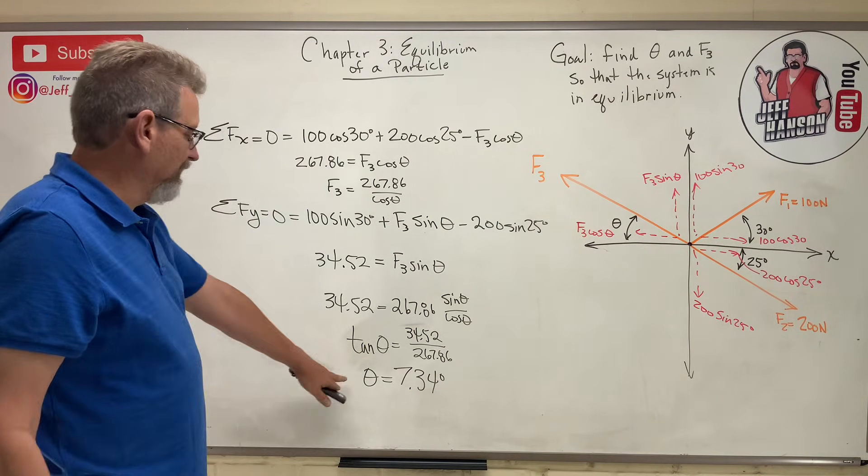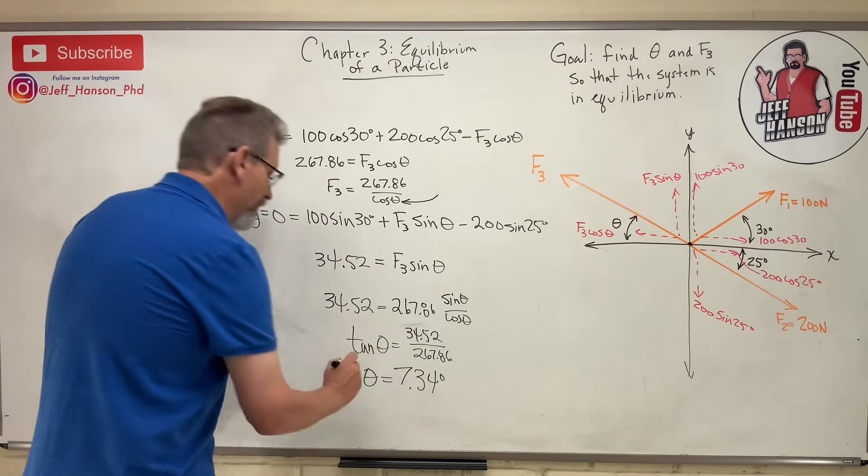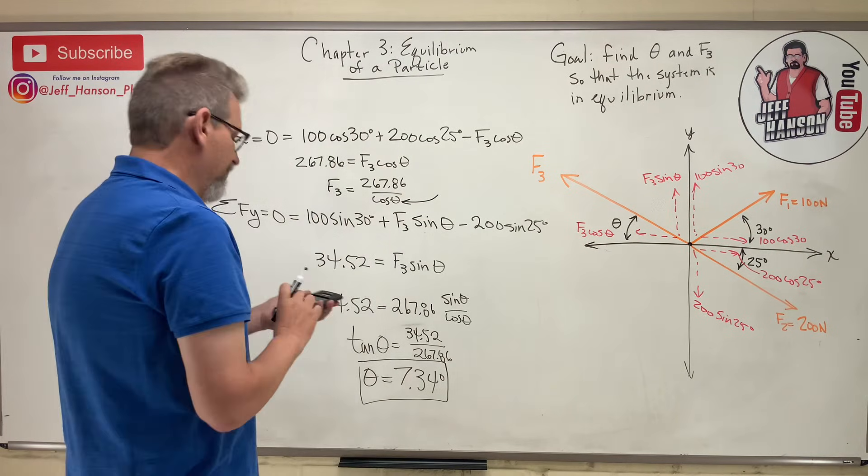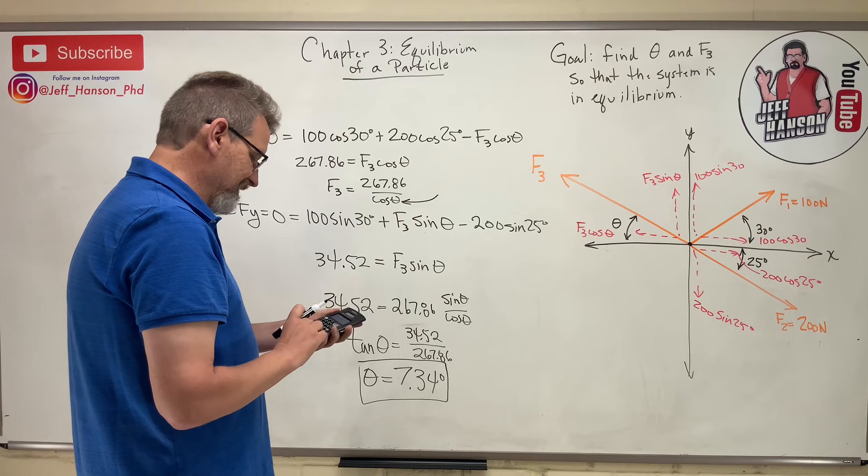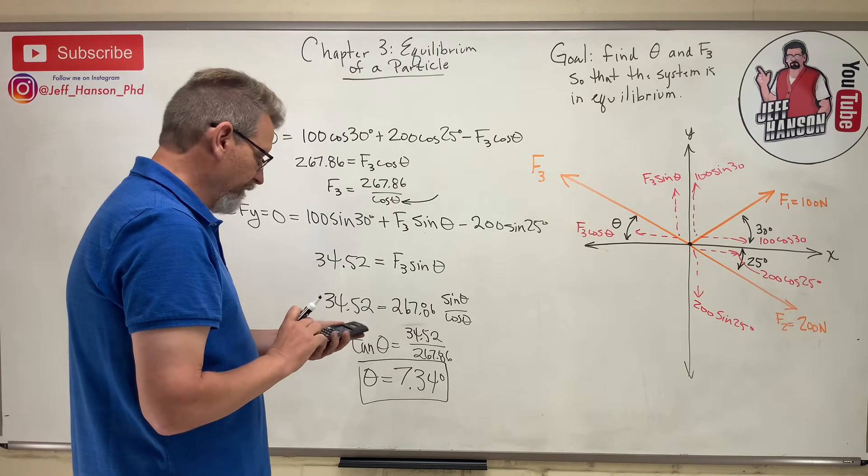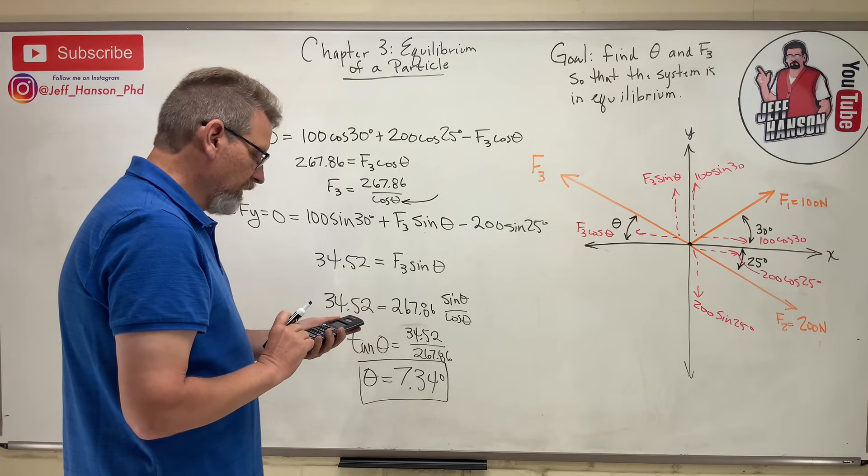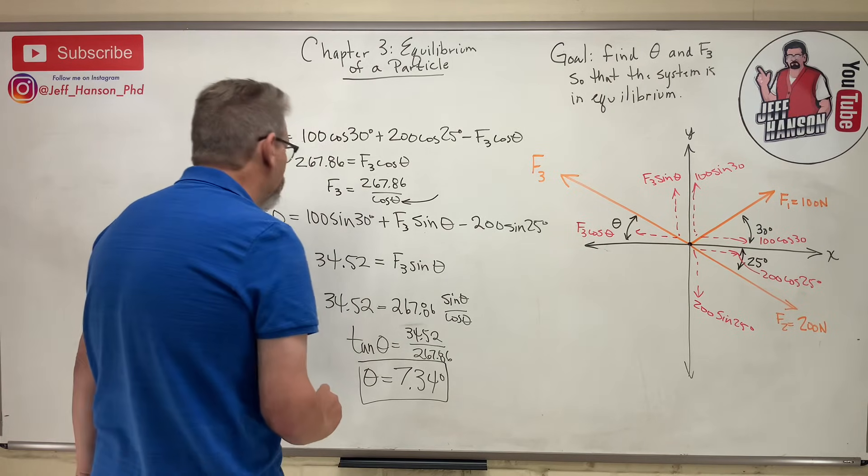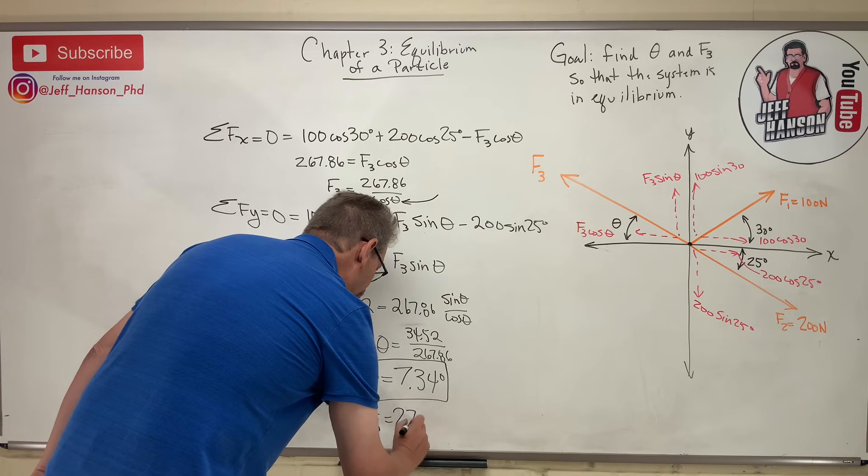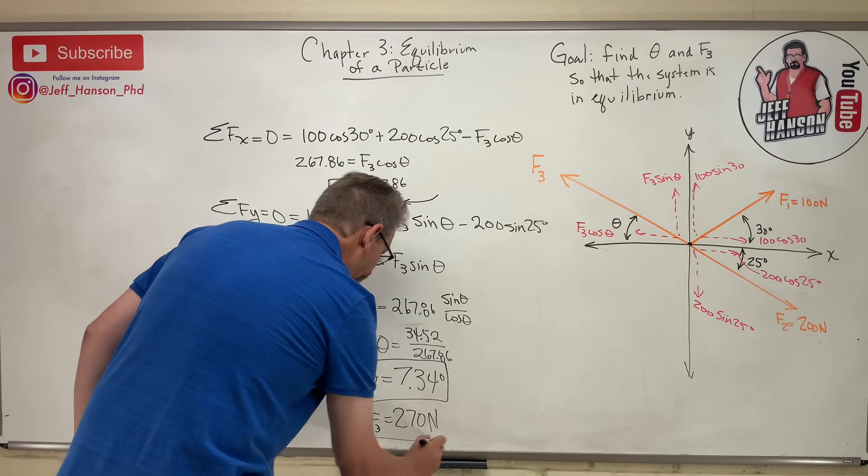Okay, so now what? Well, this is easy. Take that number, and let's just plug it right into there, and then boom, I know how big F3 is, don't I? So F3 is 267.86 divided by the cosine of 7.34, which is 270. So F3 equals 270 newtons.